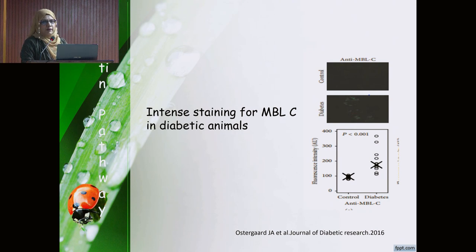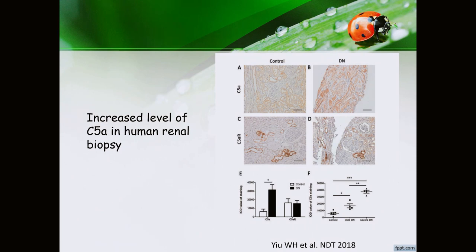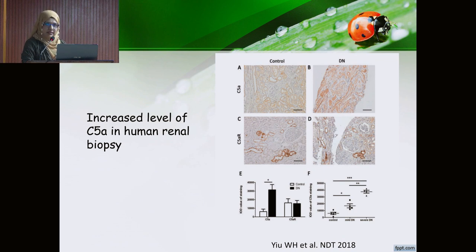To gather evidence regarding the lectin pathway, Ostegard et al. studied streptozotocin-induced mice that developed type 1 diabetes and found intense staining of mannose-binding lectin in kidney tissue of diabetic animals, supporting the lectin pathway. They also found increased C5a in human renal biopsy tissue, with its concentration associated with the severity of diabetic nephropathy. Therapeutically, administering a C5a inhibitor to mice resulted in reduced lipid accumulation in the kidney, reduced blood urea and creatinine levels, and reduced tubular fibrosis.